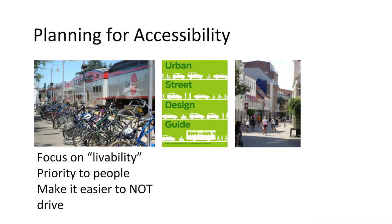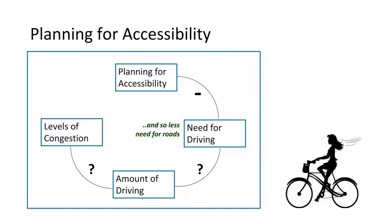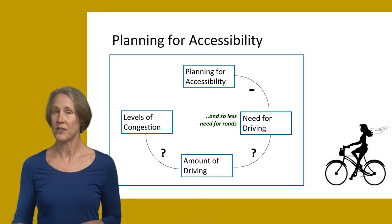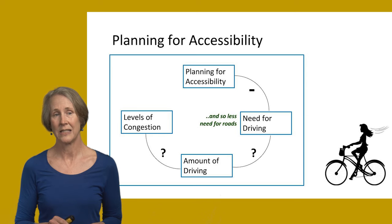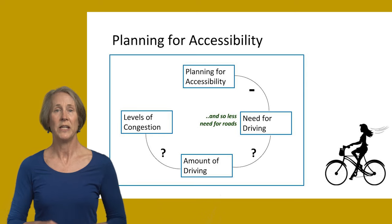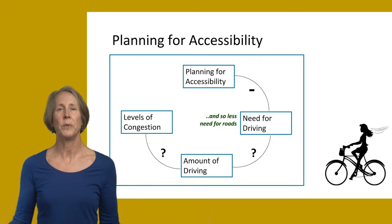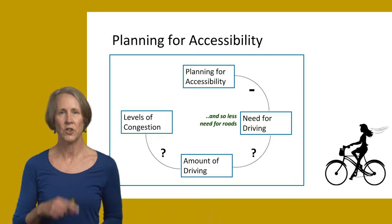If we instead plan for accessibility, it's really a different way to think about the transportation system. Planning for accessibility means focusing on livability, giving priority to people, and making it easier to not have to drive so much. This reduces the need for driving, which also reduces the need for roads. It doesn't necessarily mean people end up driving less and thus reducing congestion, but it makes it possible to drive less — leaving open the possibility that we can get out of that vicious mobility cycle.